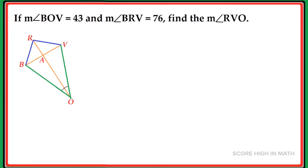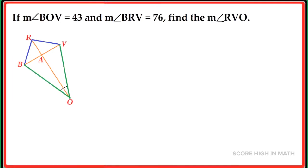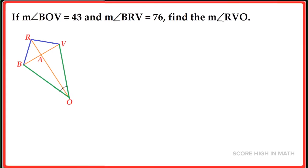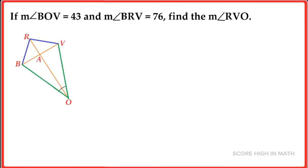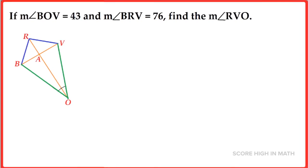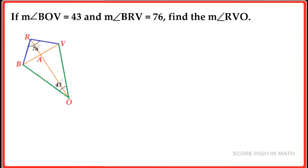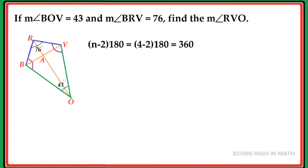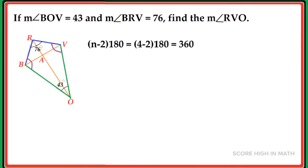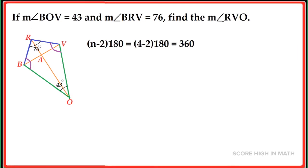Now let us try to solve this problem. If the measure of angle BOV is equal to 43 and the measure of angle BRV is equal to 76, find the measure of RVO. Let us put the given values in the diagram. So we have four sides here and we have two angles given. We can use again the polygon angle sum theorem.